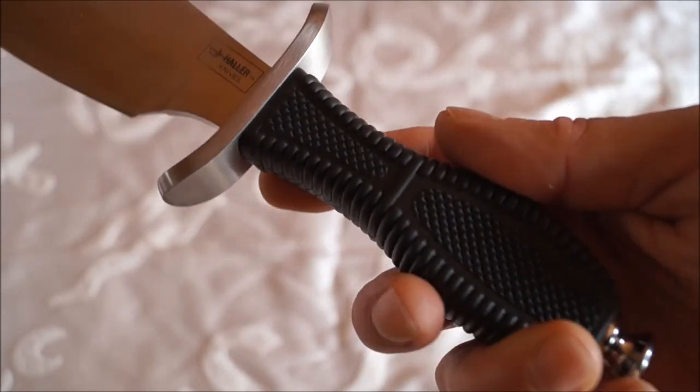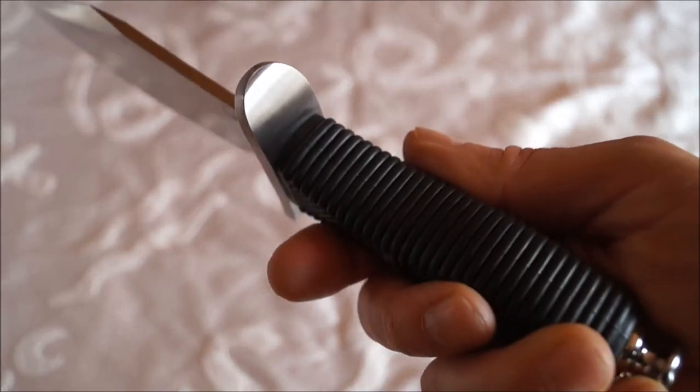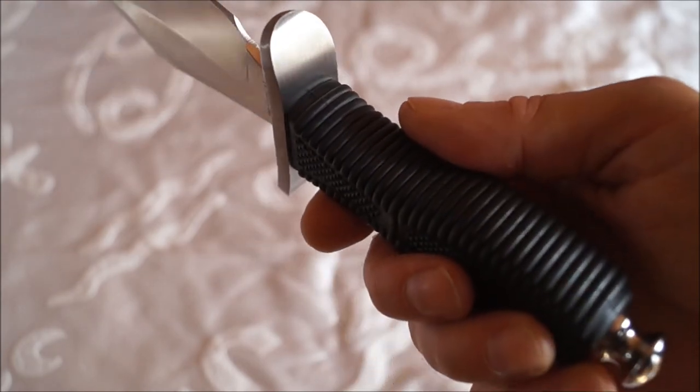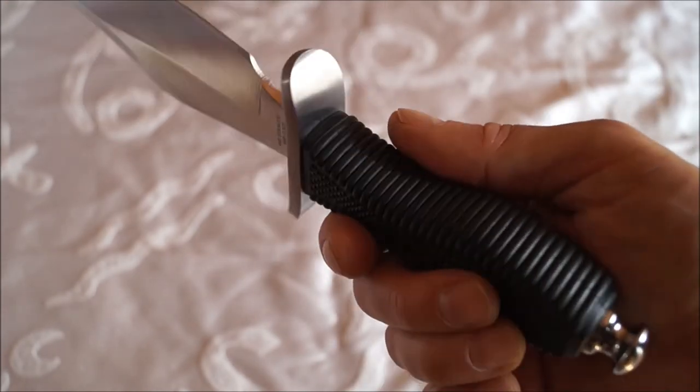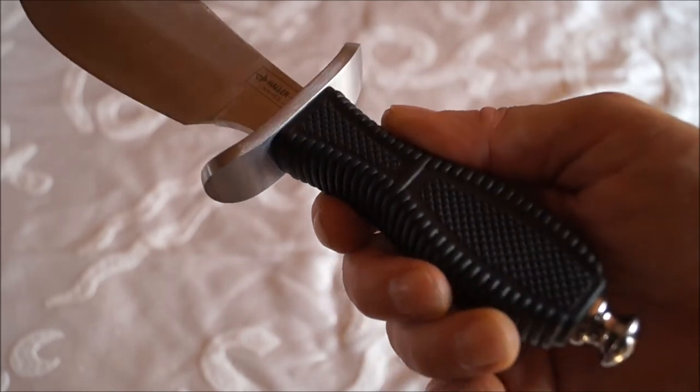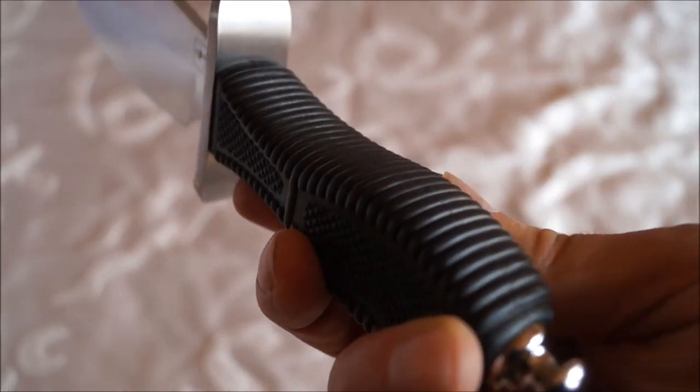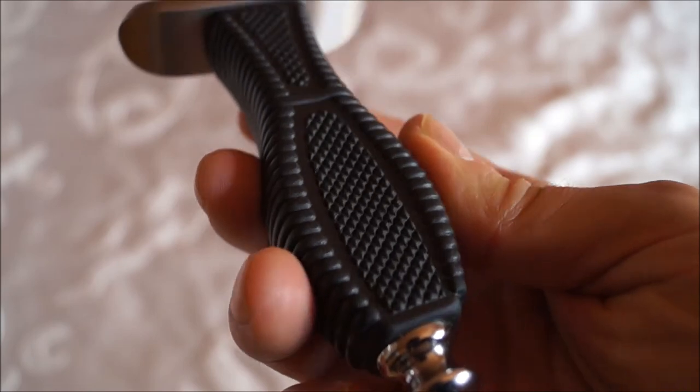Dahinter folgt der Griff. Das Griffmaterial ist ein gummiartiger Kunststoff in einem Grau-Schwarz-Anthrazit-Ton mit bultigen und rotierten Oberflächen.